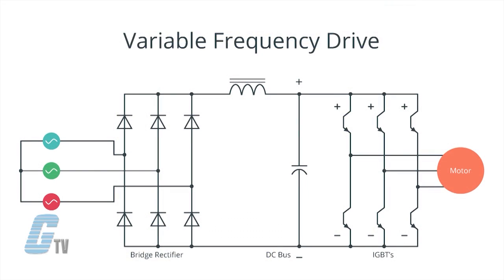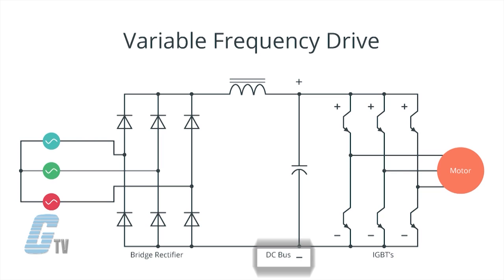When AC voltage comes into most drives, it enters a bridge rectifier. This is a group of six diodes that convert the AC to DC. In this form, the DC voltage is still not smooth and has some ripple. A DC bus system is in place with usually a capacitor to help smooth out the ripple.